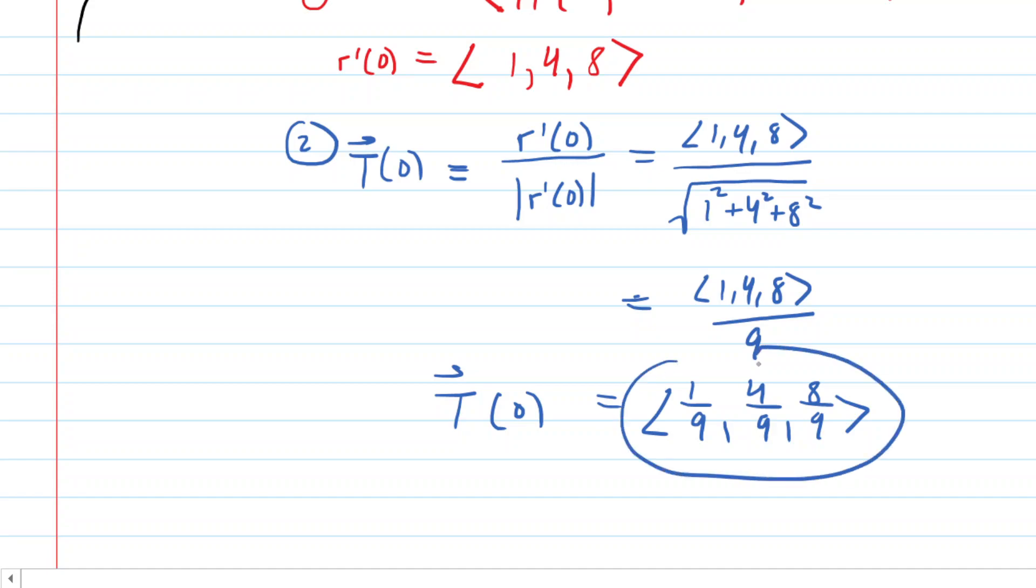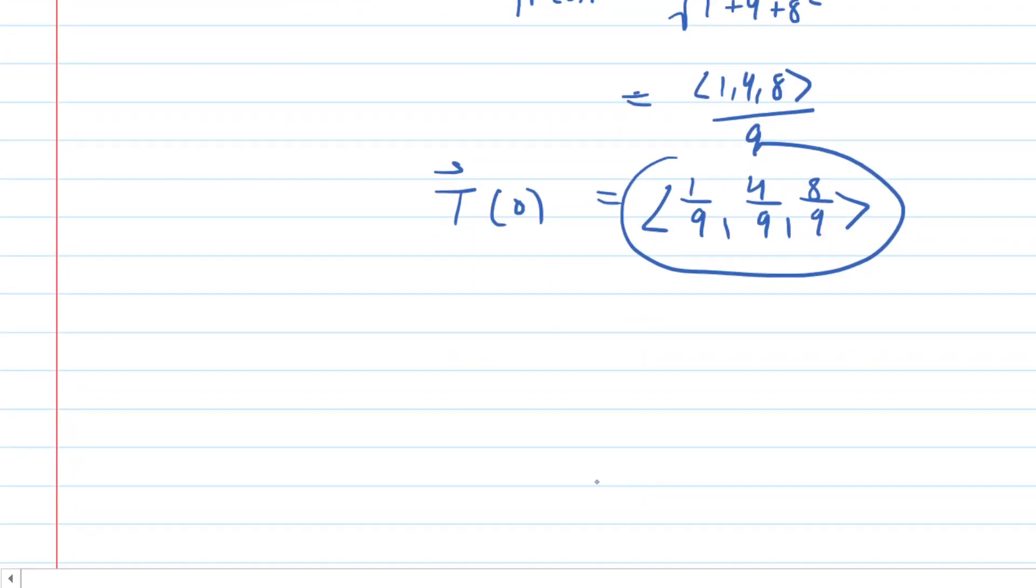And just recall that what this means is that when you look back at the curve, which was r of t, at the particular point when little t was equal to 0, we had a tangent vector, which was r prime of 0, and what we just figured out was a vector that's parallel to that tangent vector, but has a length or a magnitude equal to 1. So that's the vector that we just found in this question.